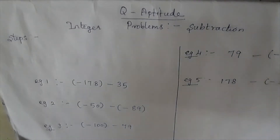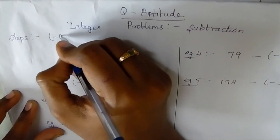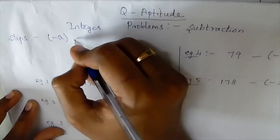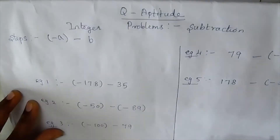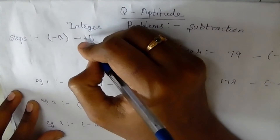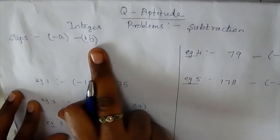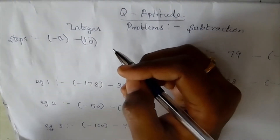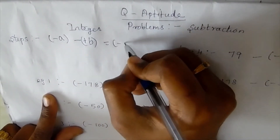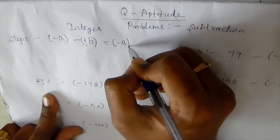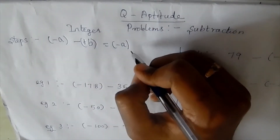First, we have the expression minus A minus B. Here we have the first step. The first step: minus A is written as it is. The next step involves minus B plus A.